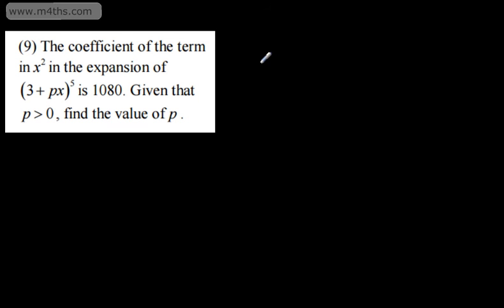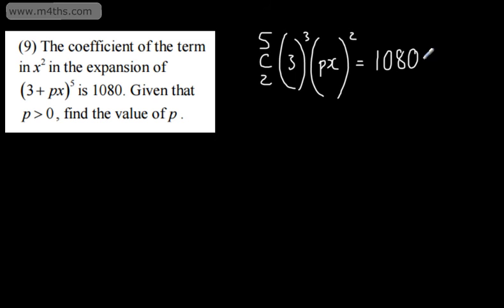I'm going to use the NCR method to find my coefficient and jump straight to the term. So we can say that this is going to be 5C2. We will have now 3 to the power of 3 and then we're going to have px to the power of 2 and this is going to be equal to 1080x squared. We can see that the x squareds are going to cancel, we're simply interested in the coefficient.